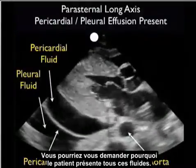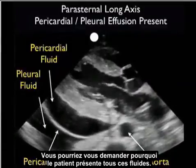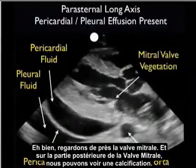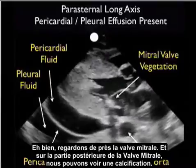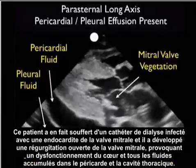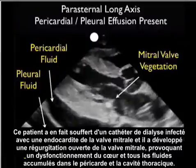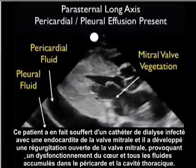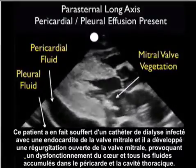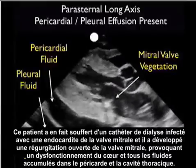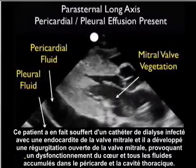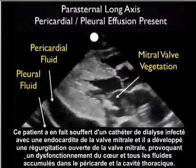Why does the patient have all this fluid? Let's look closely at the mitral valve — on the posterior mitral valve leaflet, we see a calcified vegetation. This patient, in fact, had an infected dialysis catheter with mitral valve endocarditis and had developed wide-open mitral valve regurgitation, resulting in heart failure and all the fluid layering out within the pericardium and the thoracic cavity.